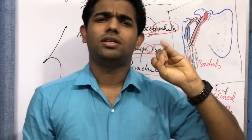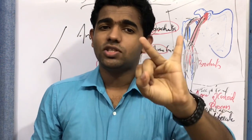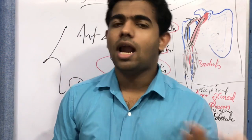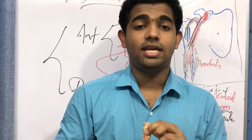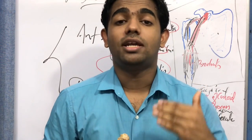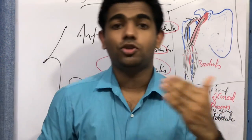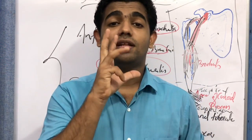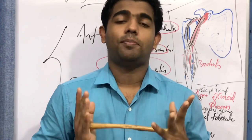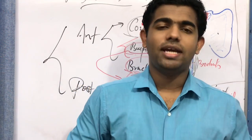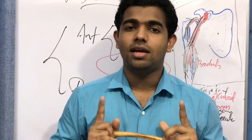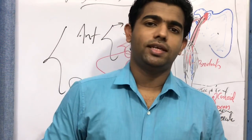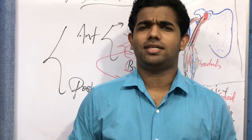To summarize insertions: coracobrachialis inserts into the mid-shaft of the humerus; biceps brachii inserts into the radial tuberosity; and brachialis inserts into the ulnar tuberosity. So the biceps goes to the radial tuberosity and its counterpart, the brachialis, goes to the ulnar tuberosity — which makes it easy to remember. Regarding nerve supply, all three muscles of the anterior compartment are supplied by the musculocutaneous nerve, a branch of the brachial plexus.